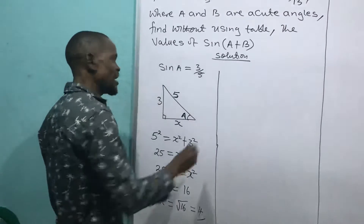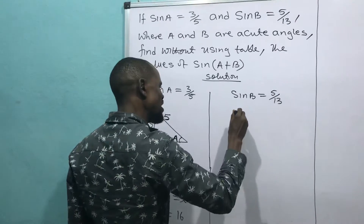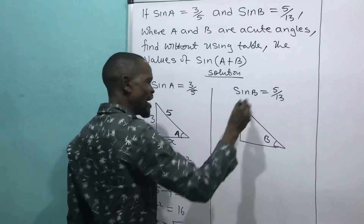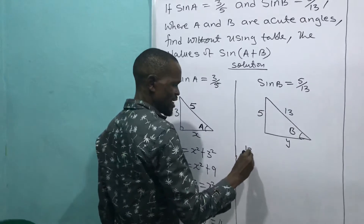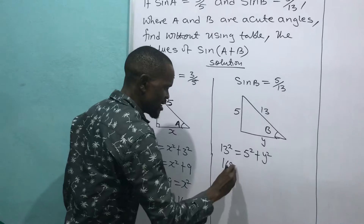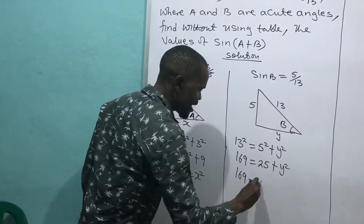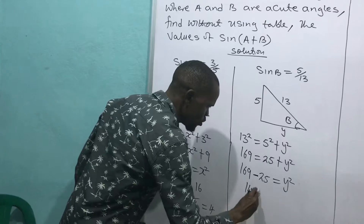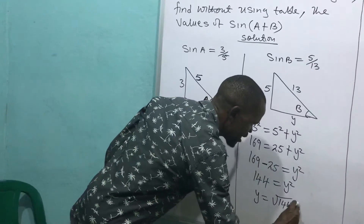Now for triangle B: sin B equals 5 over 13, meaning opposite is 5 and hypotenuse is 13. I call the adjacent side Y. By the Pythagorean theorem, 13 squared equals 5 squared plus Y squared, so 169 equals 25 plus Y squared. Therefore Y squared equals 169 minus 25 equals 144, and Y equals the square root of 144, which is 12.